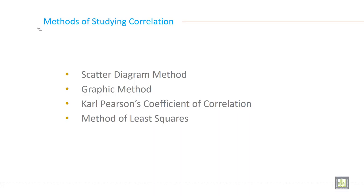Methods of studying correlation. What are the methods of studying correlation? The first and important method is finding the relationship through a scatter diagram.